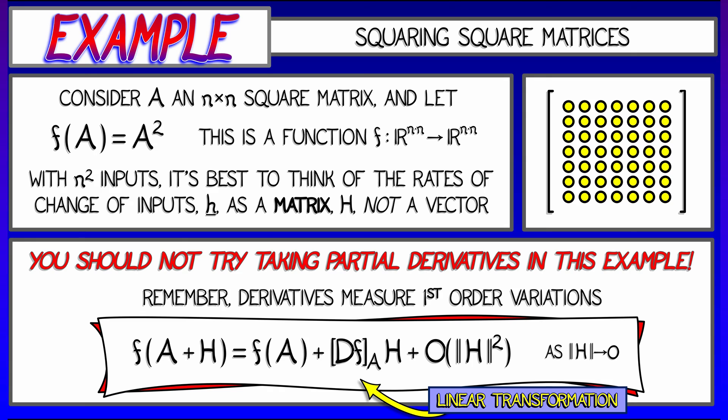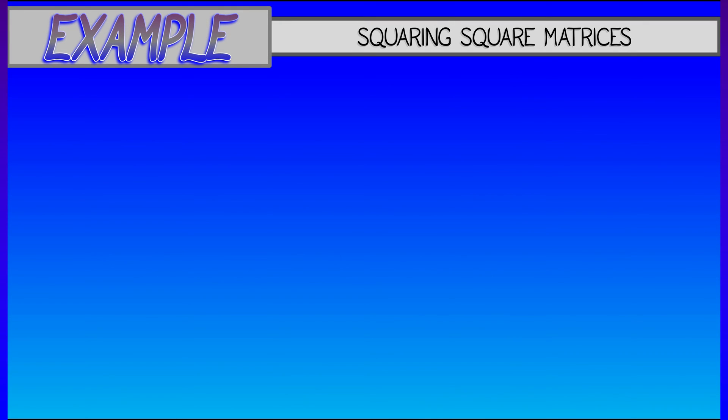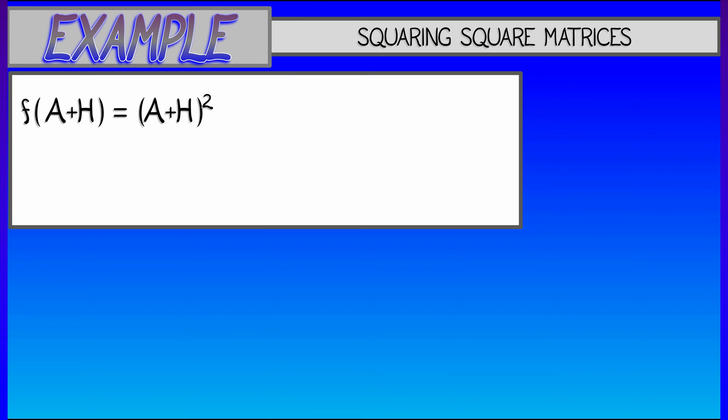So H is a really, really tiny matrix. Now, what does that linear transformation do? What does that derivative do? Well, what we need to do is simply investigate f(A+H). We know exactly what this is. This is A plus H quantity squared. You know what that is, right? A squared plus 2AH plus H squared. Ooh, wait a minute. Be careful. Matrix multiplication is not commutative. So it's not 2AH. It's AH plus HA.